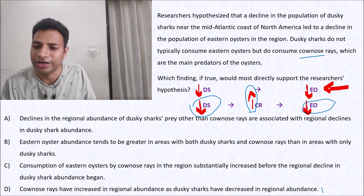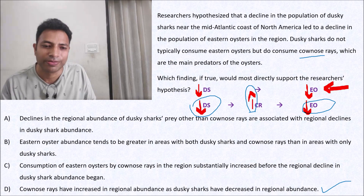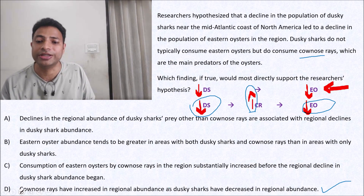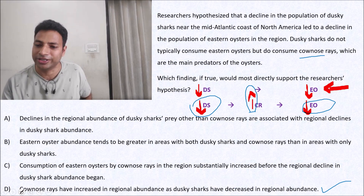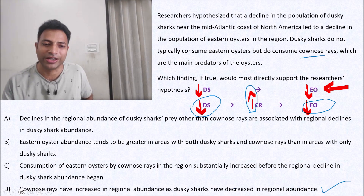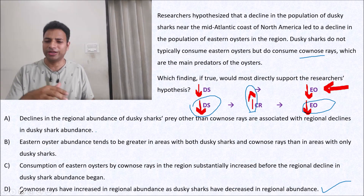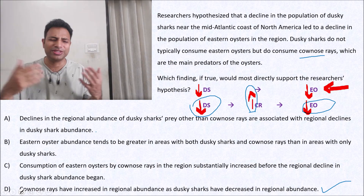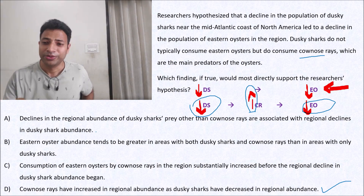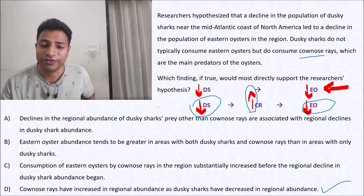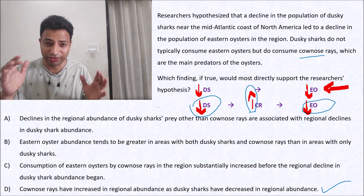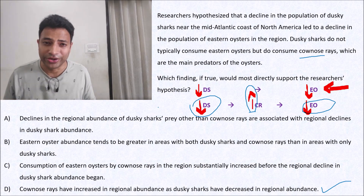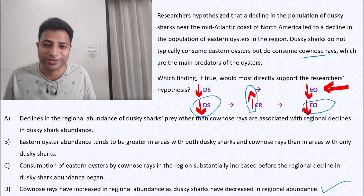And that is given in the last choice: 'Cow nose rays have increased in regional abundance as dusky sharks have decreased in regional abundance.' That gives us exactly what we need, and that is the right answer. The rest of the choices give some information, but you have to first understand the argument. If you understand the argument, if you understand the equation, it becomes really easy to identify the correct choice.